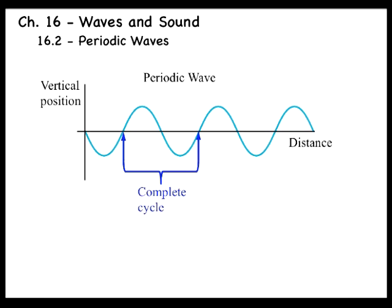The plot shows the vertical position of the spring plotted on the vertical axis, and the distance along the length of the spring plotted along the horizontal axis. Such a graph is equivalent to a snapshot of the wave taken at one instant in time, and shows the disturbance that exists at each point along the spring's length.